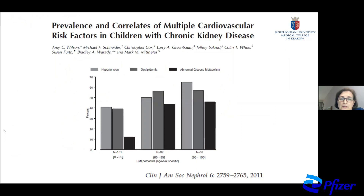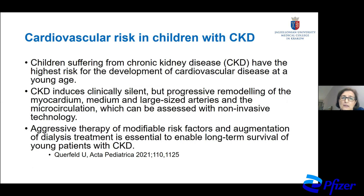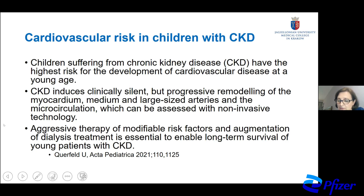In our patients with chronic kidney disease, there are many different risk factors: traditional ones like hypertension, dyslipidemia, and anemia, but also many risk factors connected with kidney disease itself — overhydration, oxidative stress, hyperphosphatemia, arterial calcification and stiffness. Many children with CKD have target organ damage including left ventricular hypertrophy and diastolic dysfunction. This group also has obesity in some patients, and in those with obesity and CKD, hypertension prevalence exceeds 60%, dyslipidemia 56%, and there is even abnormal glucose metabolism.